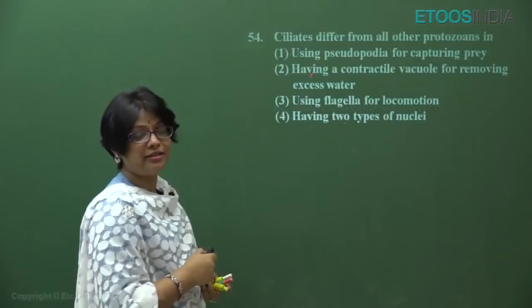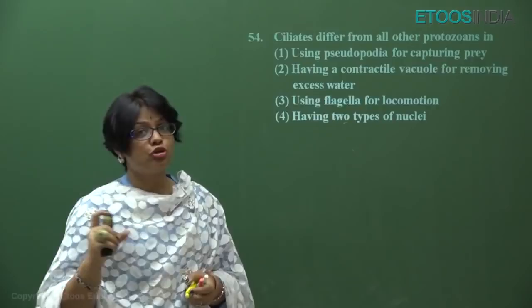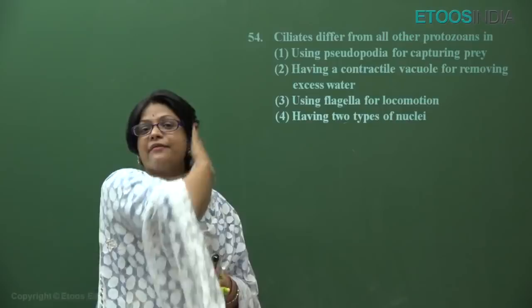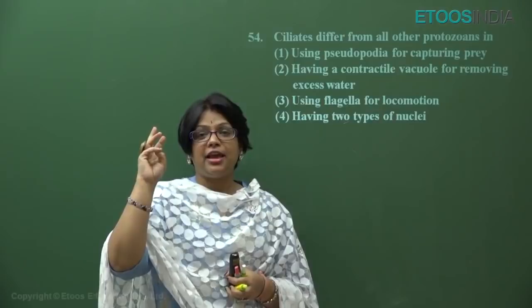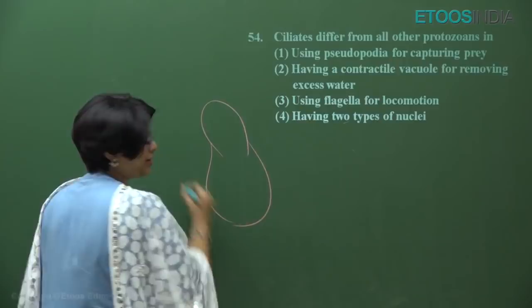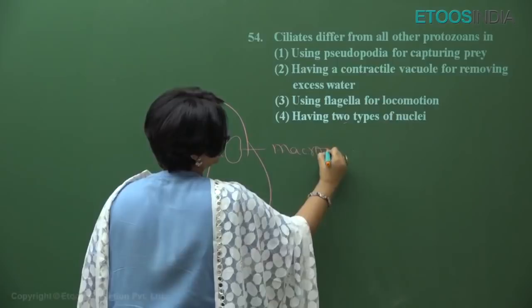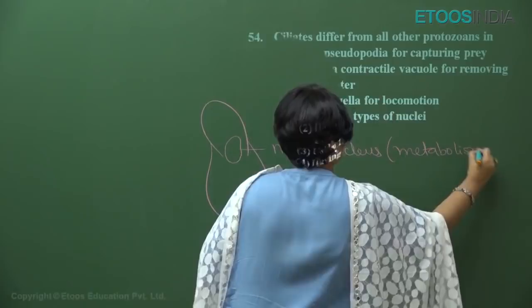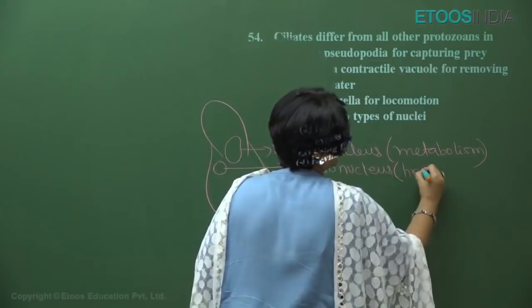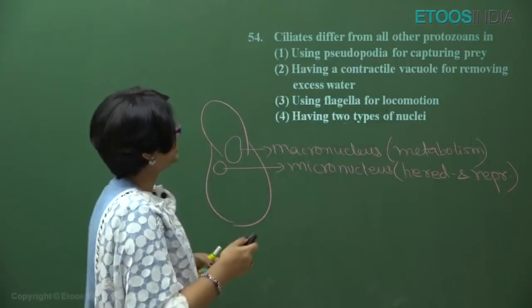Question number 54 from biological classification about protozoa: ciliates differ from all other protozoans in — the Ciliata class has special characters like a cytostome, cytopyge, trichocysts for offense and defense, and two types of nuclei. In Paramecium there are two nuclei: the large macronucleus responsible for metabolic activities, and the smaller micronucleus responsible for heredity and reproduction.